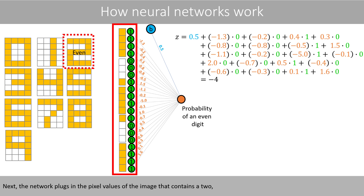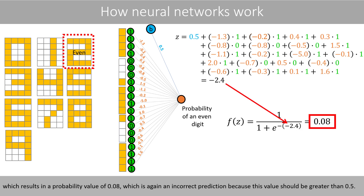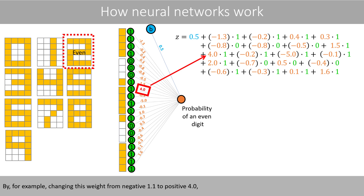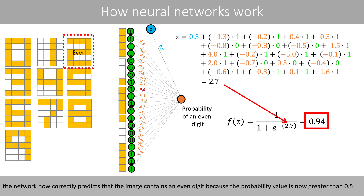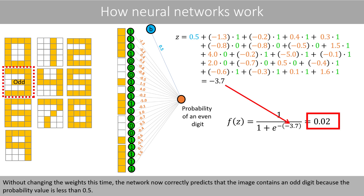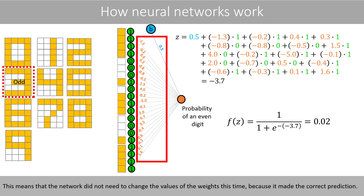Next, the network plugs in the pixel values of the image that contains a 2, which results in a probability value of 0.08 — again an incorrect prediction because this value should be greater than 0.5. The network must therefore change the weights, for example changing this weight from negative 1.1 to positive 4.0, so the network now correctly predicts an even digit. Then the network takes the values of the pixels in the image that represents a 3, and without changing the weights, it now correctly predicts an odd digit because the probability value is less than 0.5, so no weight changes were needed.